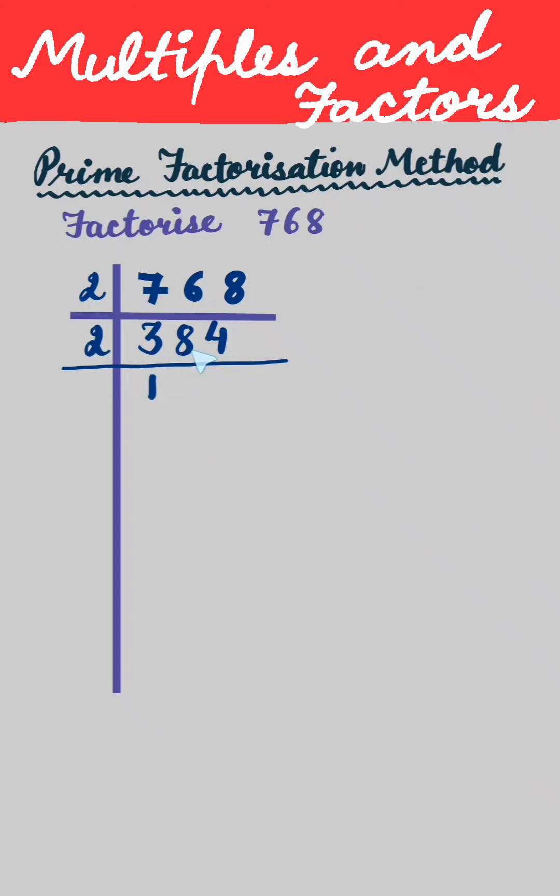2 times 1 is 2, 1 carry forward, it becomes 18. 2 times 9 is 18. 2 times 2 is 4. Again ones place is 2 so it goes into 2. 2 times 9 is 18, 1 carry forward, it becomes 12. 2 times 6 is 12.